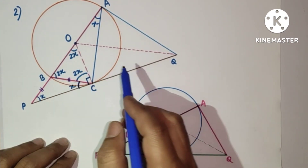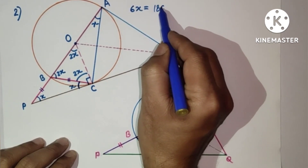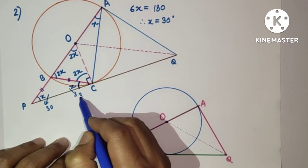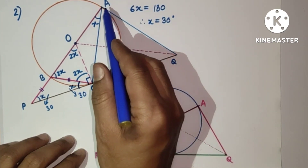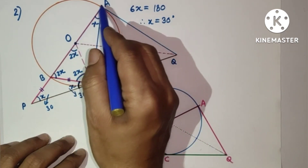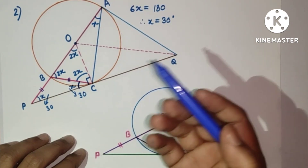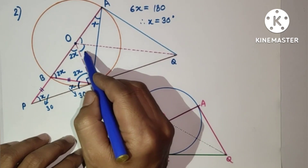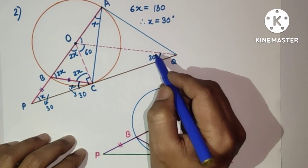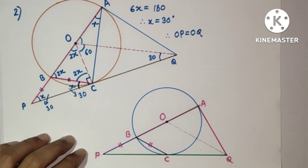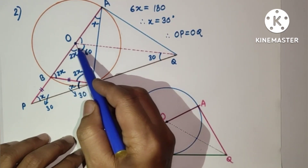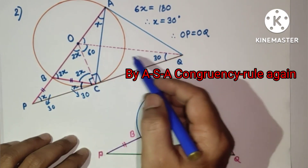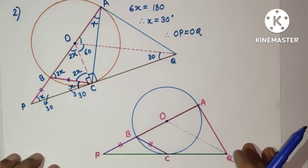We are getting 6x equals 180°, so x equals 30°. This is 30°, this is 30°, and this is also 30°. Triangles OAQ and OCQ are congruent — we have already proved the angles are 2x — so this is 2x, which gives 60°, and this will be 30°. Once again this is 30°, so OP equals OQ. Alternatively, OC is common, this angle equals this angle, both are 90°, so these two triangles are congruent, and we can directly say OP equals OQ.